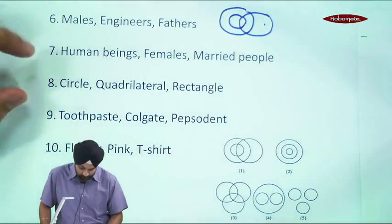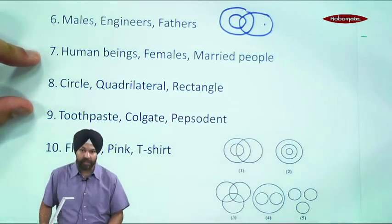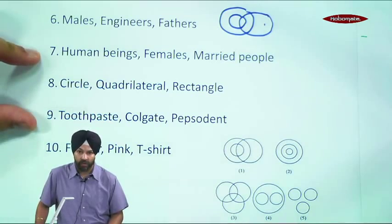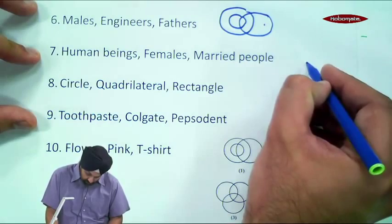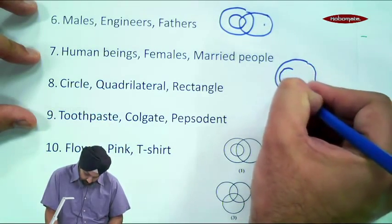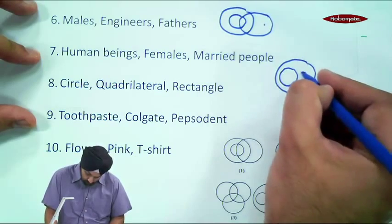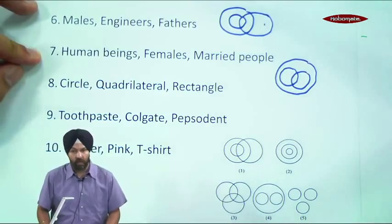Now, actually, this question's answer doesn't happen to anyone from them. Actually, this must be a Venn diagram. Human beings, married people, female, because some female married people can be married.